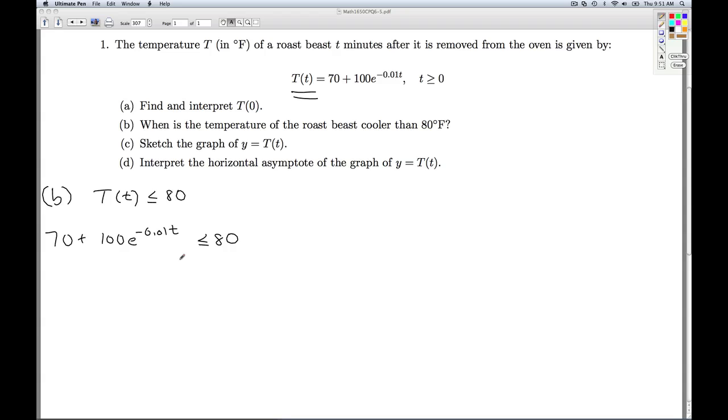This is a non-linear inequality. So the way we'll solve it is subtract the 80 over and make a sign diagram. So I'm going to call this part the f of t. And what we need to do is look for the domain and the zeros.